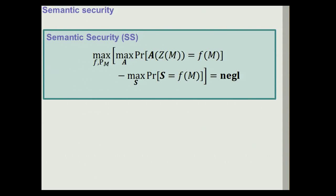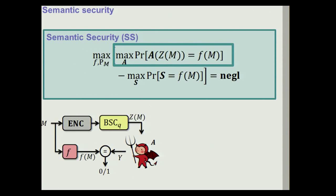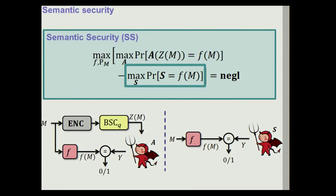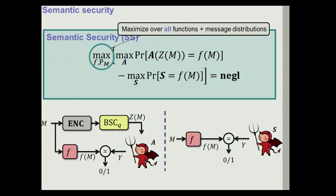A better approach is to translate semantic security to the wiretap setting. We consider an experiment where an adversary A receives a noisy encryption of a message M and must guess some function F of M. For every such adversary, we require that there exists another adversary S which is nearly as good in a setting where it does not receive the noisy ciphertext at all. We require this for all adversaries, all functions F, and all message distributions — and since we care about information-theoretic security, there are no computational restrictions.